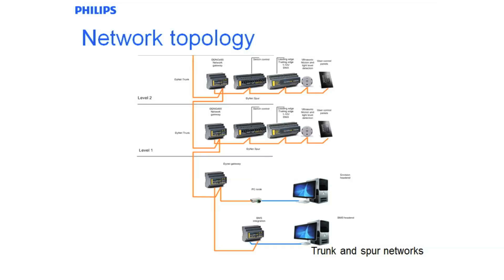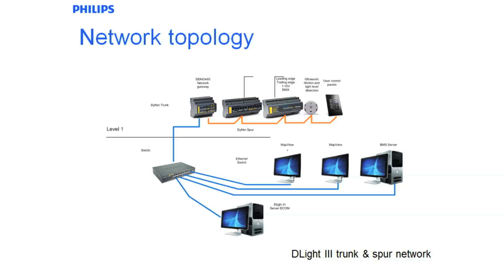We can also on that trunk put other third-party integration with BMS devices. This diagram shows a D-Lite 3 or Vision Manager trunk and spur network topology.